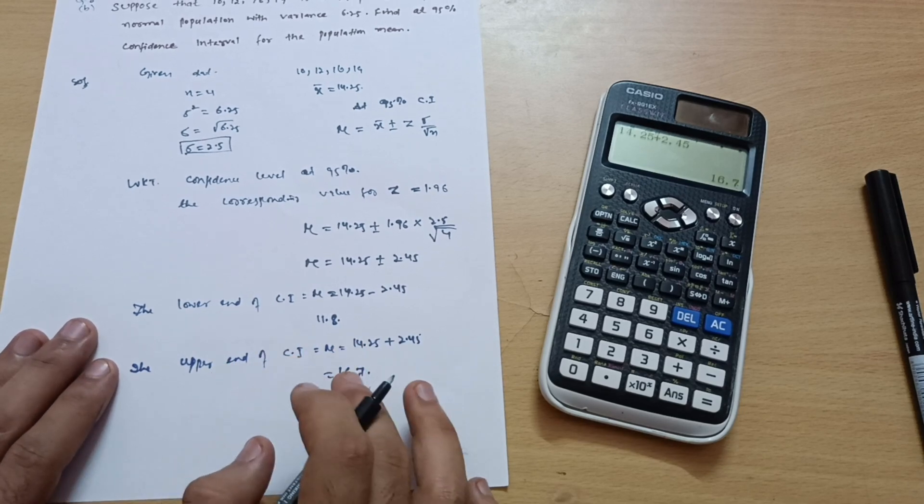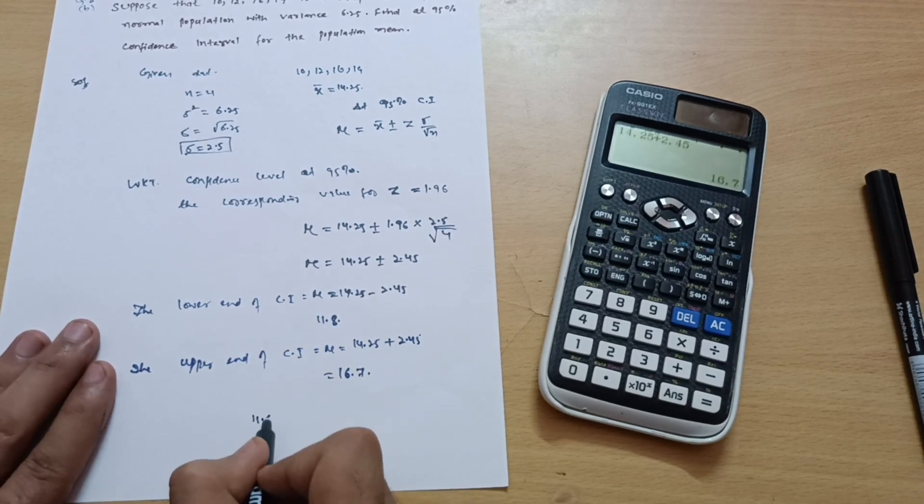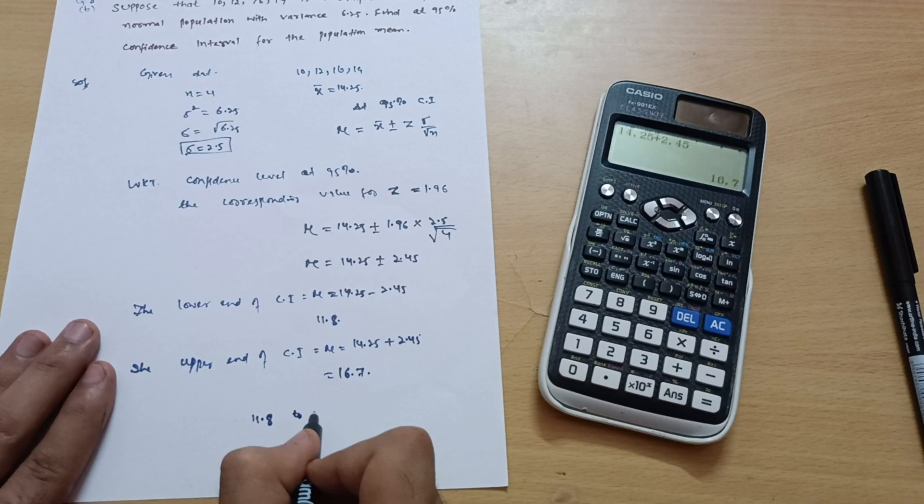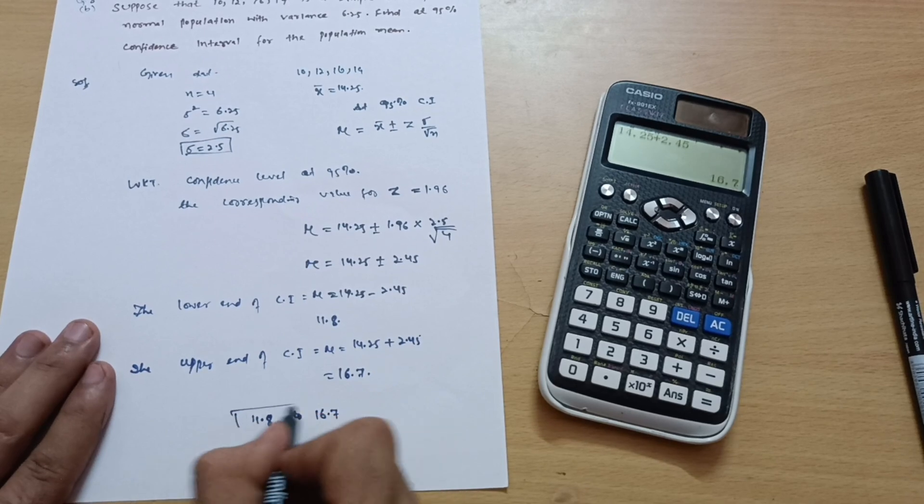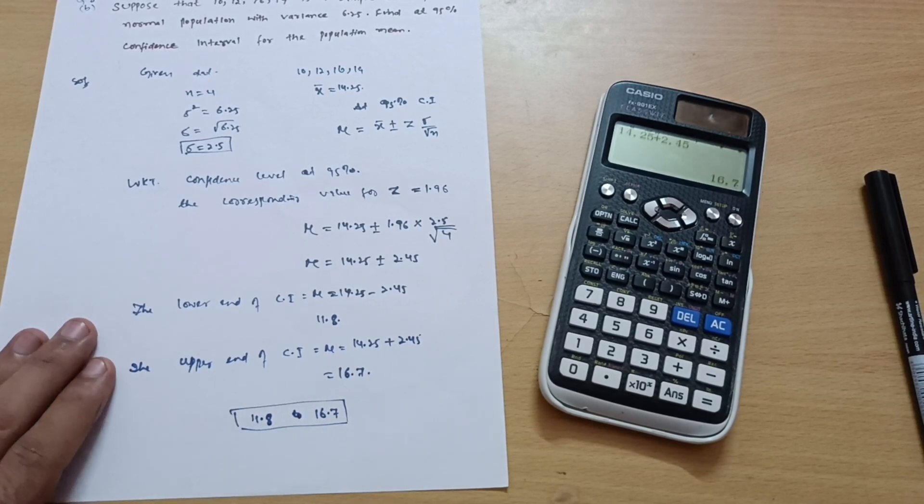So 14.25 plus 2.45, which is equal to 16.7. So I can say that the range of the confidence intervals is from 11.8 to 16.7. This is your answer for this particular question.